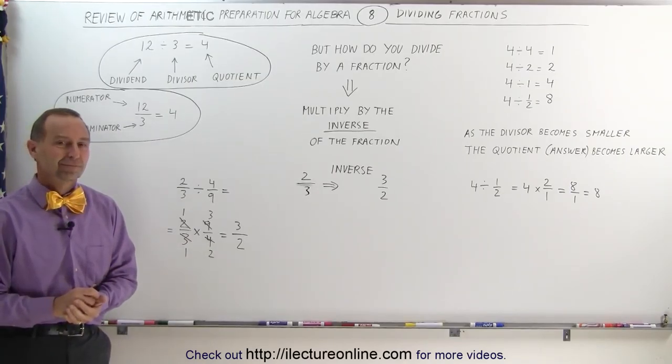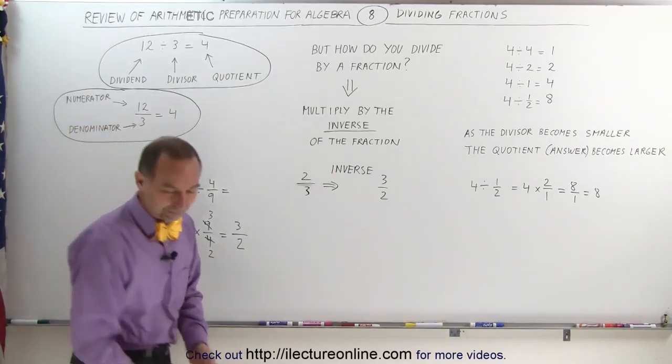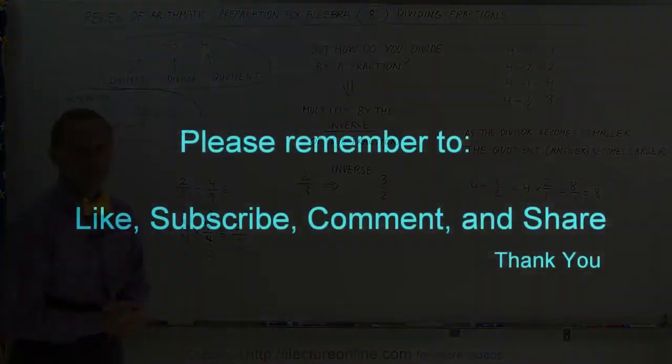Remember, when you divide by numbers smaller than 1, and 4 ninths is smaller than 1, you get a bigger number than what you started with, which indeed is what we got here. So that's how we divide by a fraction.